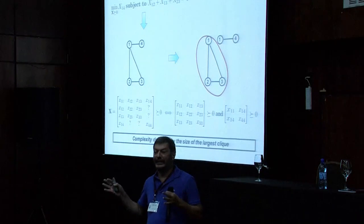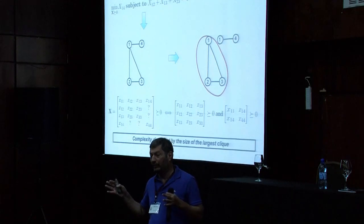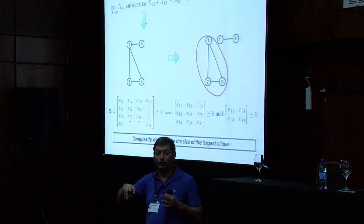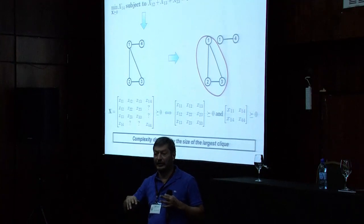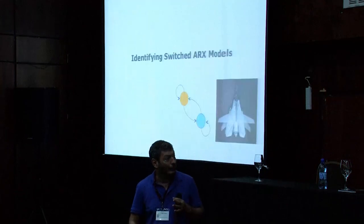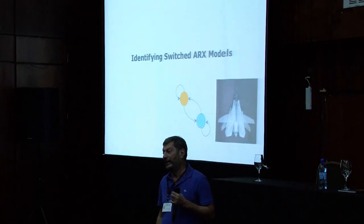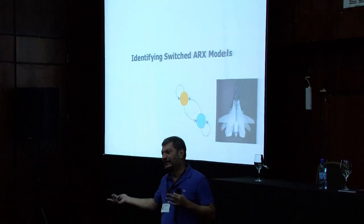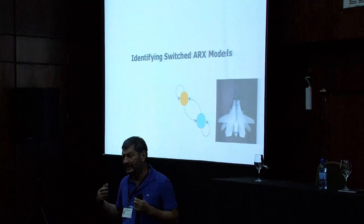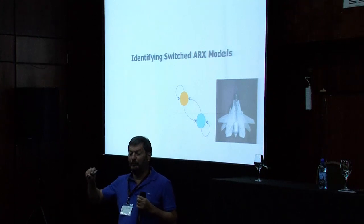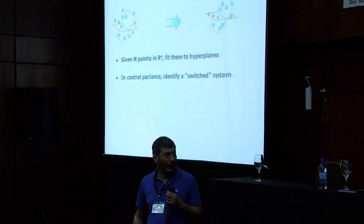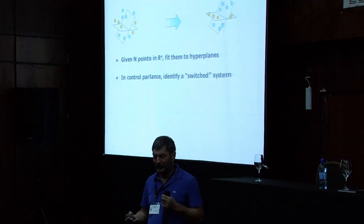I'm going to make a connection between the size of the clique and something that's actually very intuitive in control systems. But keep this in mind: don't just take a huge SDP and try to solve it. Look at the structure, and if the graph is very sparse, you can use that to your advantage and substantially reduce the computational complexity.